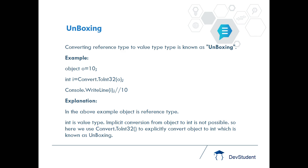In the first line of the example, object o = 10, meaning value 10 is stored in object type. In the second line, we use Convert.ToInt32() to explicitly convert the value inside the object to int, because object is a larger type compared to int so we have to explicitly convert. In the third line, Console.WriteLine prints the value inside i, which is 10. So here, converting from object type to int type — reference to value — is known as unboxing.